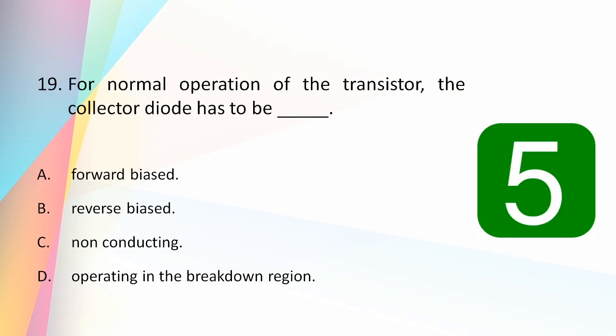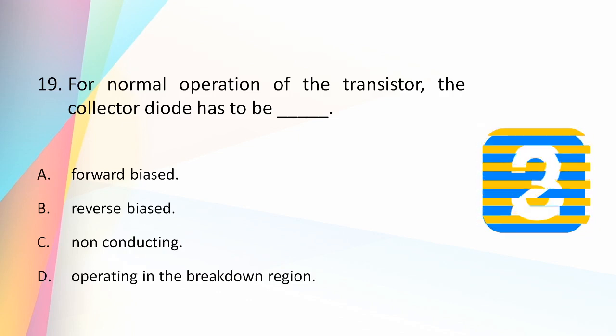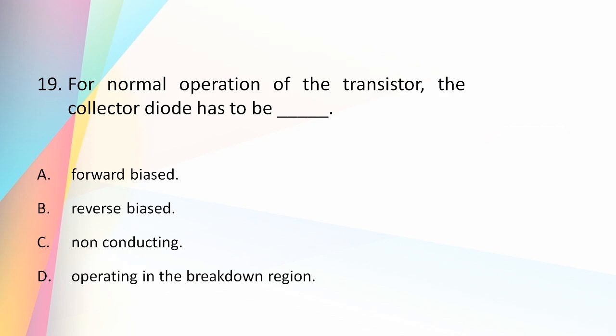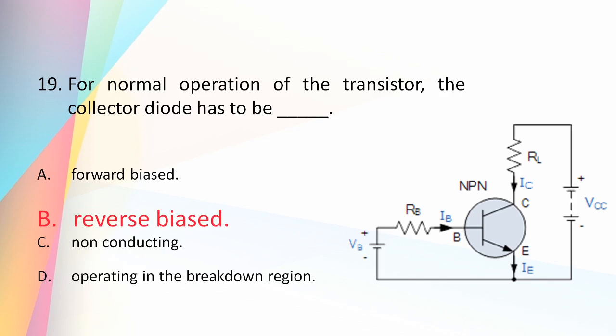For normal operation of the transistor, the collector diode has to be: forward biased, reverse biased, non-conducting, or operating in the breakdown region? The answer is reverse biased. In typical operation, the base-collector junction is reverse biased, meaning the P-side is connected with a lower or negative potential and the N-side with a higher or positive potential. Hence the base junction acts as a diode in reverse bias, which is why it is called the collector diode.